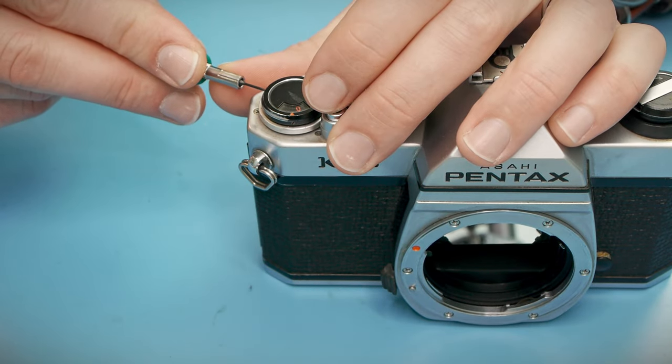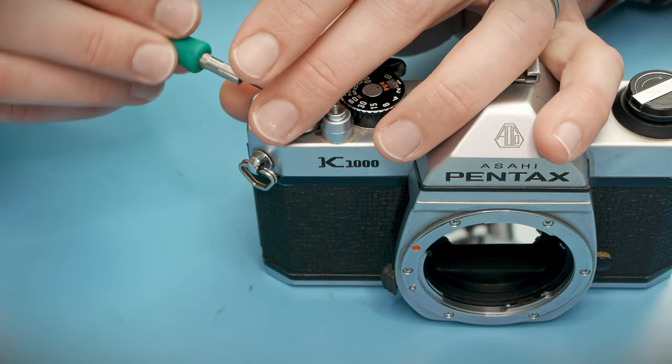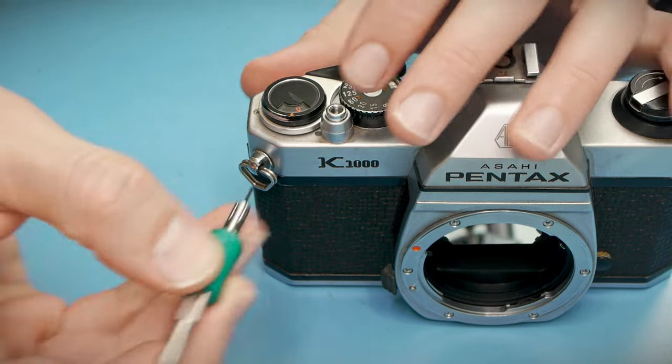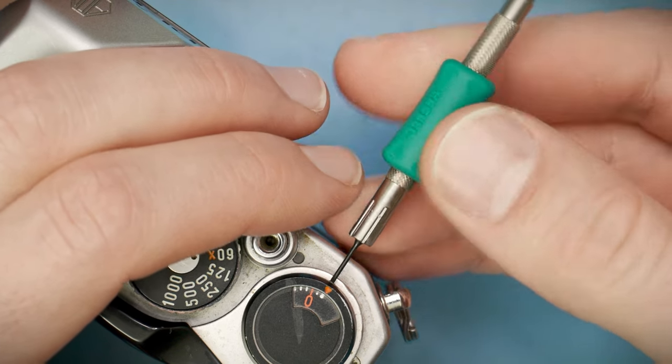I usually start the top cover removal with the film counter mechanism. There are three small grub screws tucked into the side of the counter window. I'll loosen those, but I'll leave them in the cover. I don't need any more loose screws to keep track of.